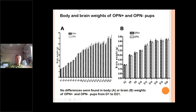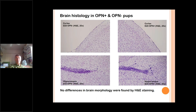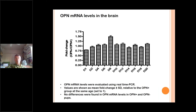Body weights were normal, meaning milk quality was not impaired. Brain weights were also normal — nothing striking when it comes to brain growth. We didn't see any difference in histology in pups fed milk with or without osteopontin. We did see a trend in gene expression of osteopontin in the brain — not significant, but by day eight, some 50% more osteopontin was expressed as messenger RNA.